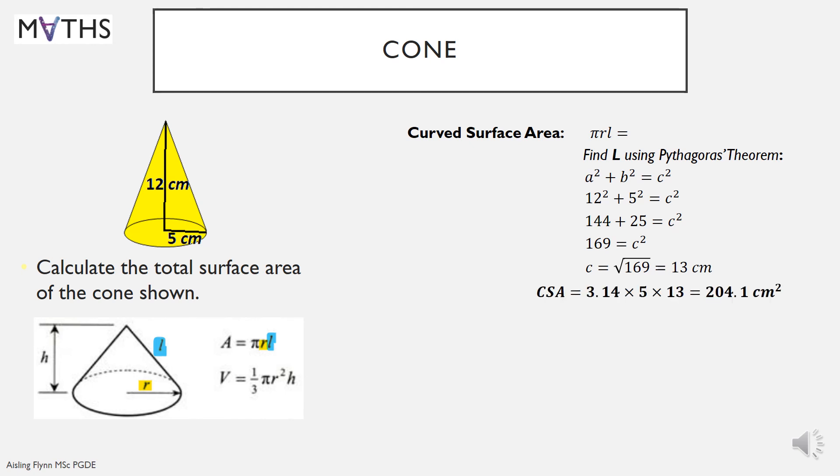And we can put that into our formula for the curved surface area. CSA pi by r by l. And I got 204.1. Pause that there if you want to review it. The base is a circle, pi r squared. R is 5 in this case. And we got 78.5. Add them together to give your total surface area of 282.6 centimeters squared.